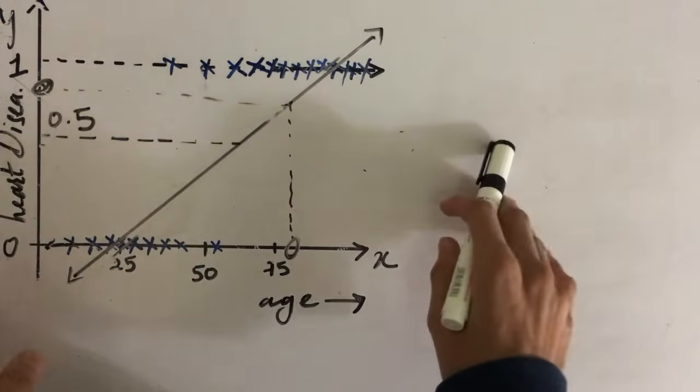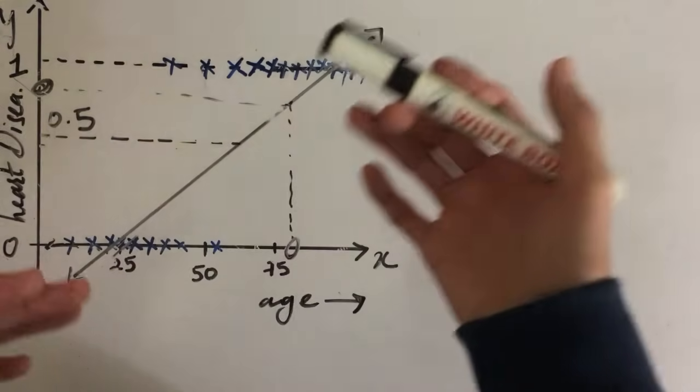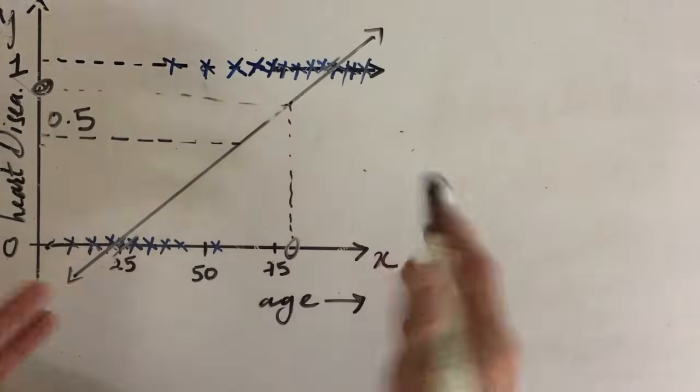So this much is the probability that the person is having a heart disease, and if this probability is above 0.5 then we will classify it as 1, or if the probability is below 0.5 we will classify it as 0.